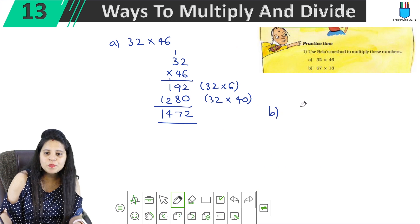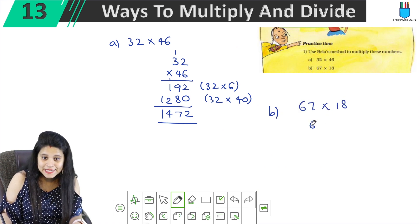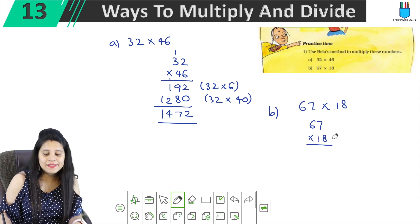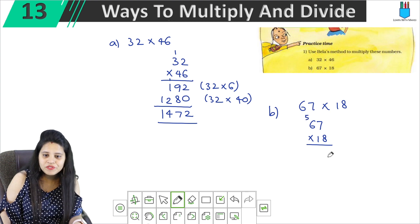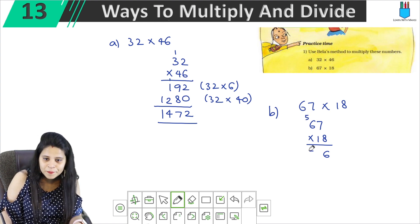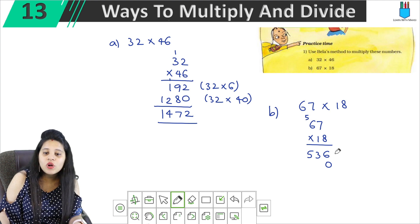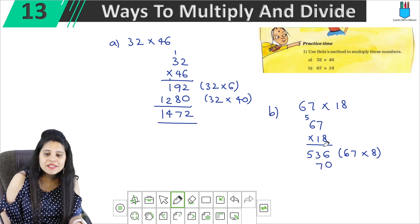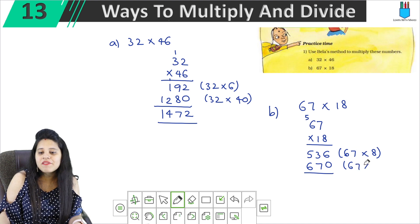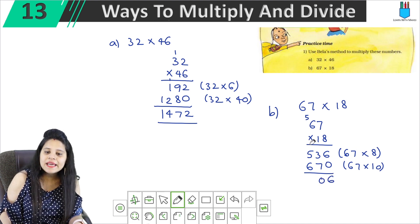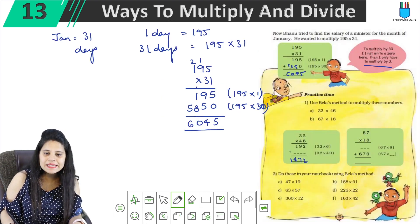Part B: we have to multiply 67 × 18. So: 8 into 7 is 56, carry 5. 8 into 6 is 48, plus 5 is 53. We write 0 here. Then 1 into 7 is 7, 1 into 6 is 6. We multiplied 67 by 1, but it was 10, so we place a 0. Adding: 7 plus 3 is 10, carry 1. Result: 1206. We write 1, 2, 0, 6 and fill it in.